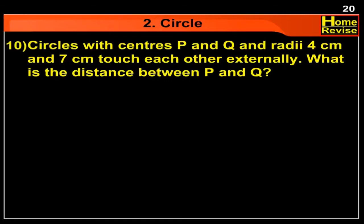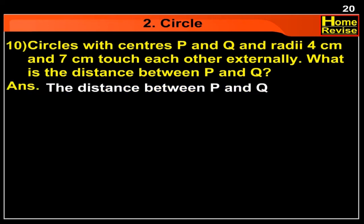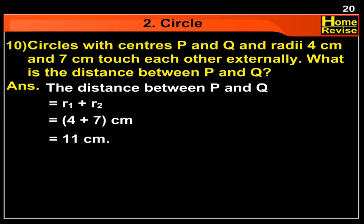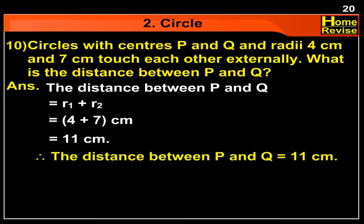Circles with centers P and Q and radii 4 cm and 7 cm touch each other externally. What is the distance between P and Q? Answer: The distance between P and Q is equal to R1 plus R2, that is 4 plus 7 cm, which is 11 cm. So the distance between P and Q is 11 cm.